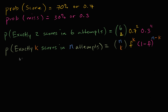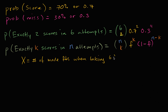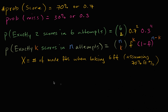So let's define the random variable x. Let's say that x is equal to the number of made free throws when taking six free throws — so it's how many of the six do you make. And we're going to assume what we assumed in the first video in this series: a 70% free throw percentage.